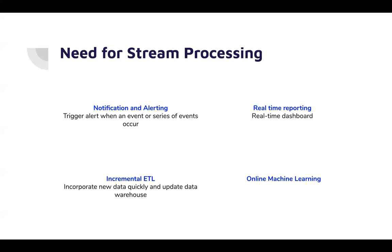Stream processing is also useful for real-time recommendations. You may have historical data and keep getting new data, and based on that new data your machine learning models can train themselves to give more precise recommendations or more precise filtering. Any machine learning algorithm can be applied in an online manner. Stream processing has lots of advantages and lots of use cases.